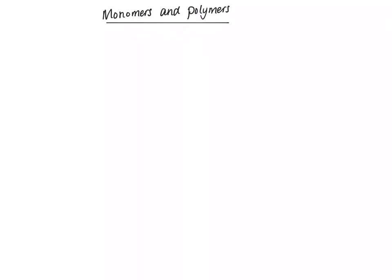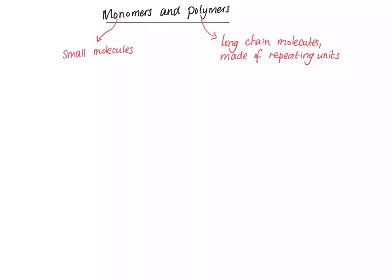Monomers and polymers. Monomers are small molecules and polymers are long chain molecules made of repeated units, so if you react lots of monomers together you get a polymer.